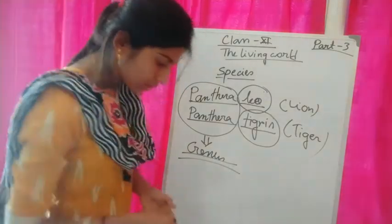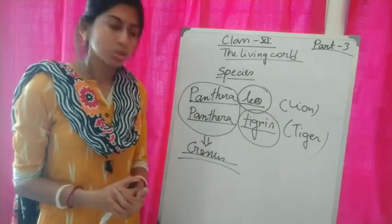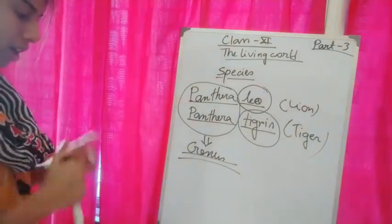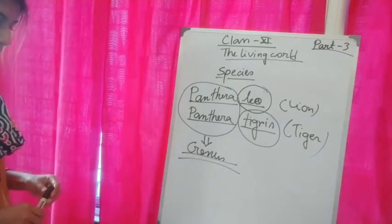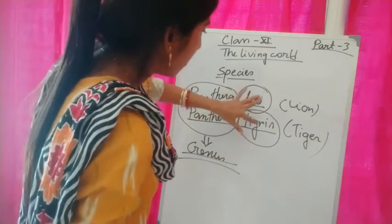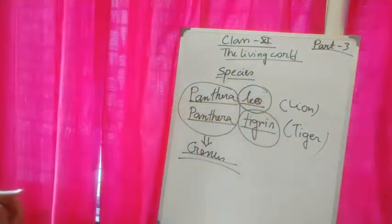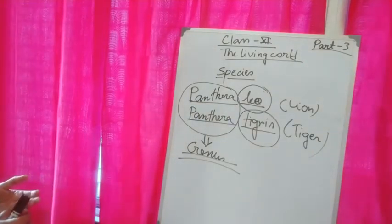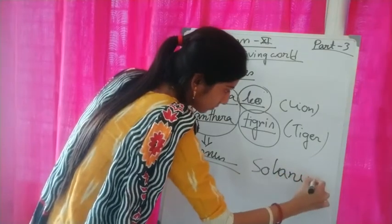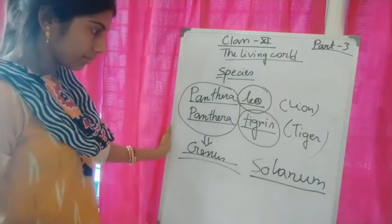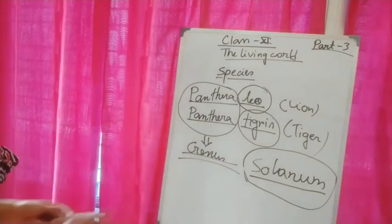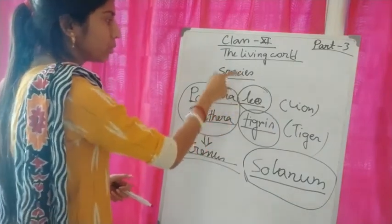Genus comprises a group of related species which has more characteristics in common in comparison to species of other genera. Another example: Solanum tuberosum and Solanum nigrum — solanum is the same genus, but tuberosum and nigrum are two different species. From these examples, we understand both species and genus.